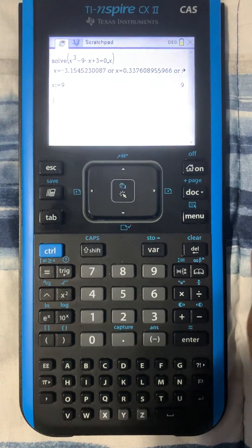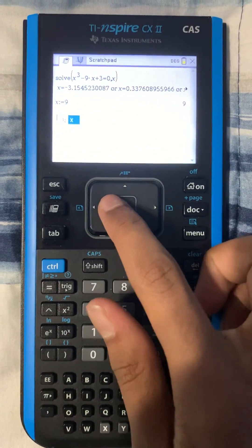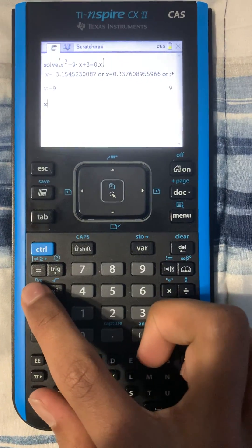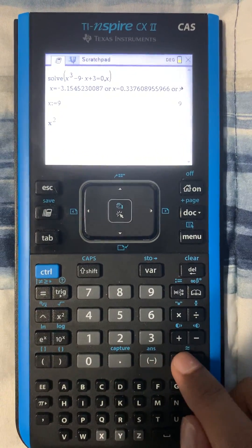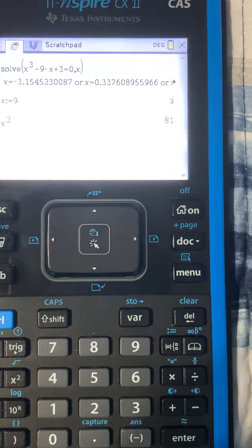And it'll be defined. Whenever you want to call upon it, just press X. And if you want to square it, just press Squared, and it'll have the answer printed over there.